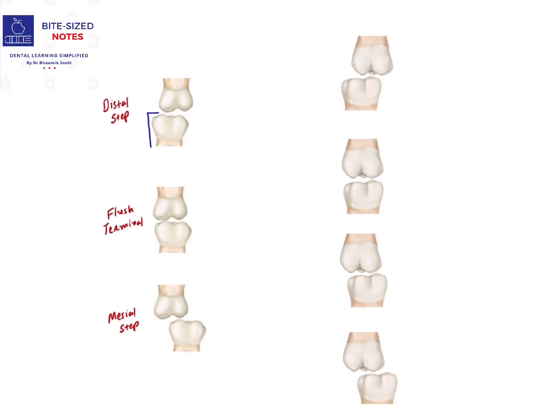When the distal surface of the mandibular deciduous second molar is present distal to the maxillary deciduous second molar, it is known as distal step. In this condition, the permanent teeth that erupt distal to this tooth will also erupt in the same fashion.